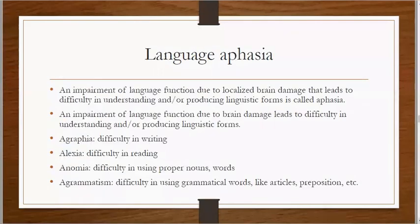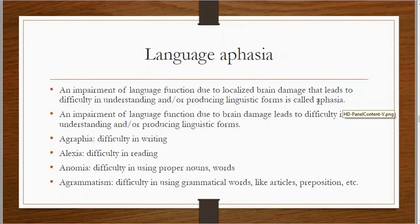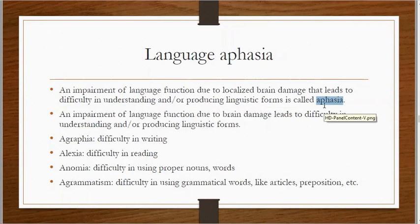Moving on to disorders — tip of the tongue, slip of the tongue, and slip of the ear are not disorders; they are simply errors or mistakes. But when we have damage to a part of the brain, that causes a disorder. An impairment of language function due to localized brain damage that leads to difficulty in understanding and producing linguistic forms is called aphasia.